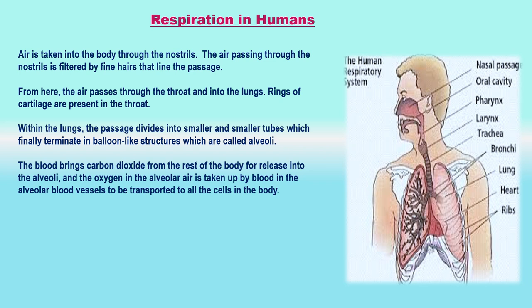The two bronchi are connected to the two lungs. The lungs lie in the chest cavity or thoracic cavity, which is separated from the abdominal cavity by a muscular partition called the diaphragm. The pouch-like air sacs at the ends of the smallest bronchioles are called alveoli (singular: alveolus). The walls of alveoli are very thin and they are surrounded by very thin blood capillaries. During the breathing cycle, when air is taken in and let out, the lungs always contain a residual volume of air so that there is sufficient time for oxygen to be absorbed and for carbon dioxide to be released.